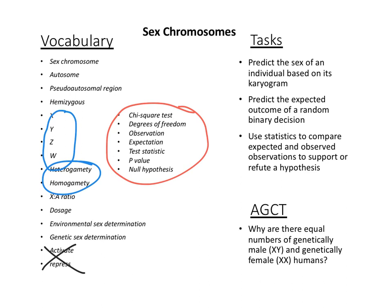We've been talking about using statistics to come up with expected outcomes and testing expectations with observed data. We've already discussed why humans have approximately equal numbers of XX and XY individuals. One key goal for today is predicting sexes based on karyograms — we've been looking at chromosomes all semester, and this is another way to apply our understanding of what chromosomes look like and how they connect to sex.